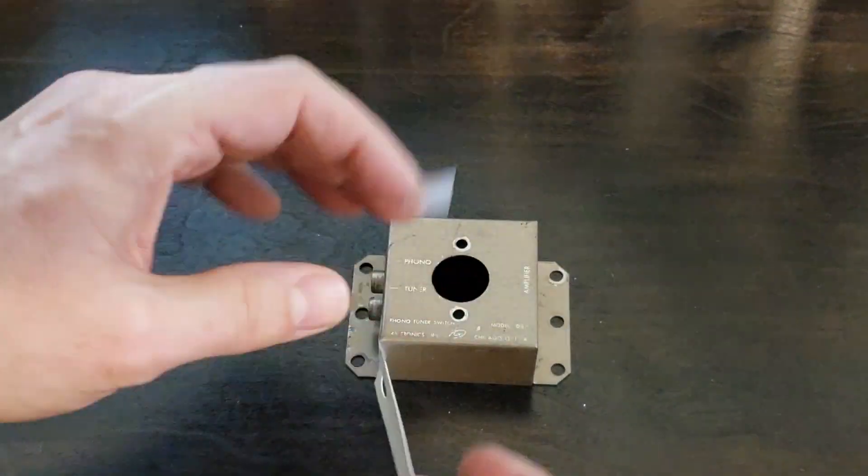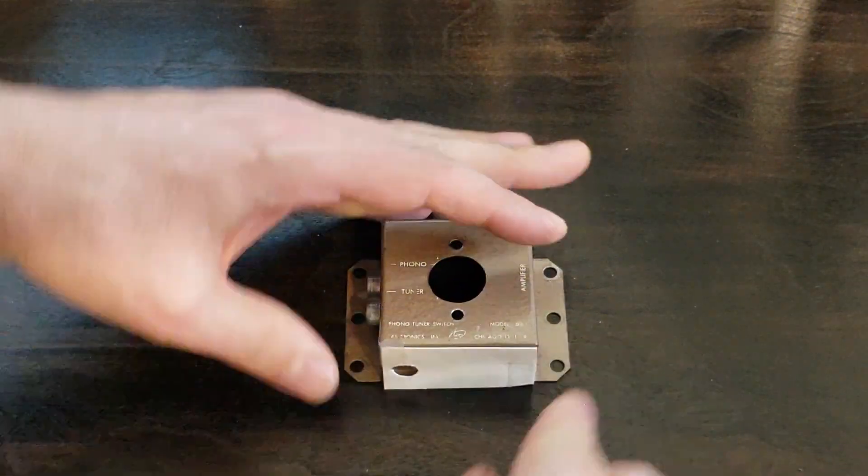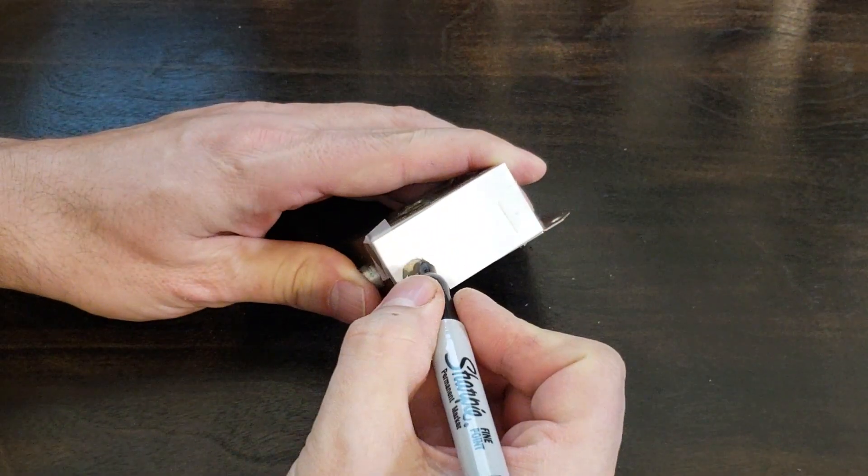Now to drill the other side, I'm going to use the same template. But since it's a smaller hole, I'm just going to use a smaller drill bit.